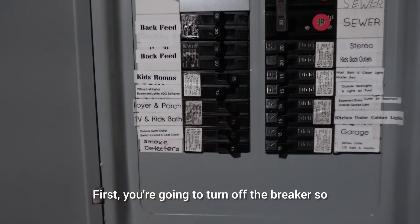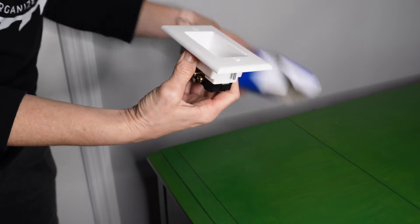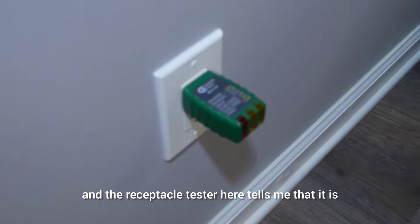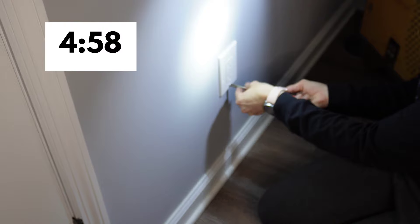First, you're going to turn off the breaker so that you can kill power. Then we're going to get the switch out of the box. Now we'll check that the outlet is in fact turned off, and the receptacle tester here tells me that it is. So we're good to go. Let's start that clock. Five minutes to go.